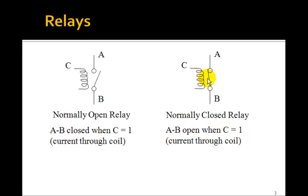Here, if C equals 0, it's actually closed, so current would run from A to B. And when you make C equals 1, that is, run current through the coil, it opens it. So how can you use these two types of relays to form gates?